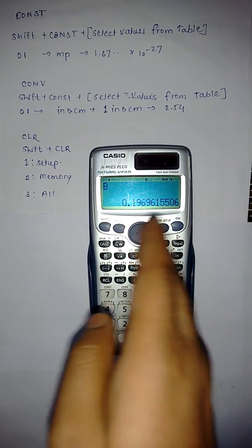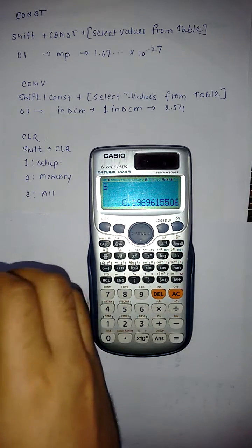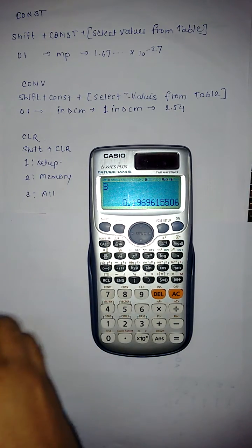0.19 in B. So these results are stored in memory. If you want all the settings, all the things cleared, then you have to use this clear.